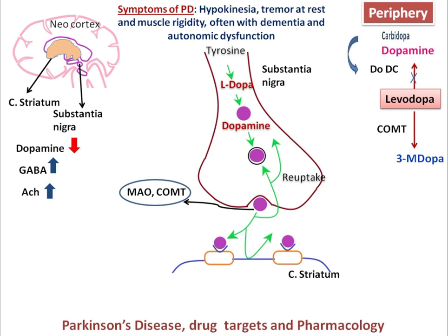When levodopa is given in combination with carbidopa, which is a dopa decarboxylase inhibitor, the overall efficiency of levodopa is increased. Carbidopa reduces the dose of levodopa tenfold and overall improves the symptoms of Parkinson's disease. Another drug inhibiting COMT is entacapone, which acts in the periphery of the brain and improves the symptoms associated with Parkinson's disease.